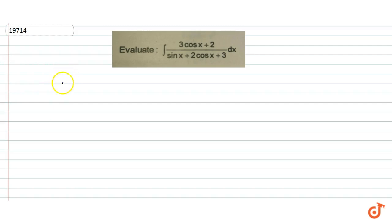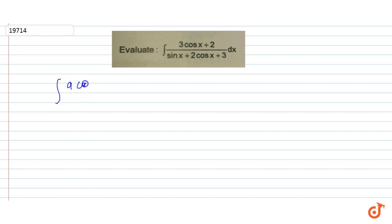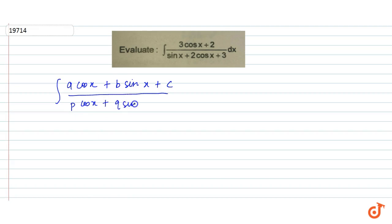In this question we need to evaluate this integral: (3cos x + 2) divided by (sin x + 2cos x + 3) dx. We can observe that this belongs to the general form of (a cos x + b sin x + c) divided by (p cos x + q sin x + r) dx.